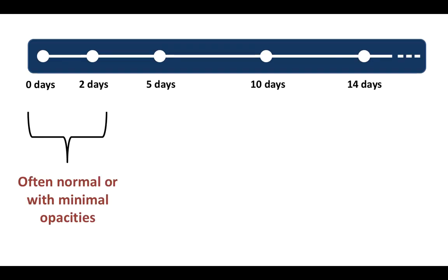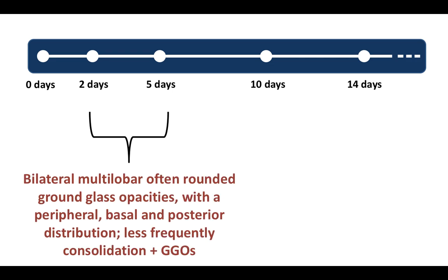The imaging findings of COVID-19 vary depending on the timeline of infection. Initially in the first couple of days, CT is often normal or may show minimal opacities. From day 2 to day 5-6, we see the classic bilateral multilobar ground glass opacities, which are often rounded with a peripheral, basal, and posterior distribution. Consolidation along with ground glass opacities can also be seen, more commonly in older patients.